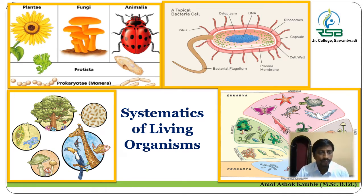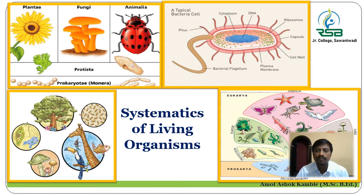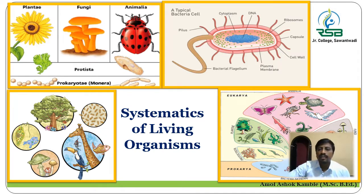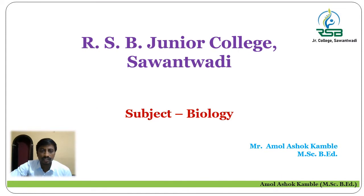Hello everyone, welcome. In our last lecture we discussed the definition of systematics, taxonomy, their objectives, classification, its need, the two kingdom system of classification, and the general outline of the five kingdom system of classification given by scientist R.H. Whittaker. Today we are going to start with the first kingdom from the five kingdom system of classification.